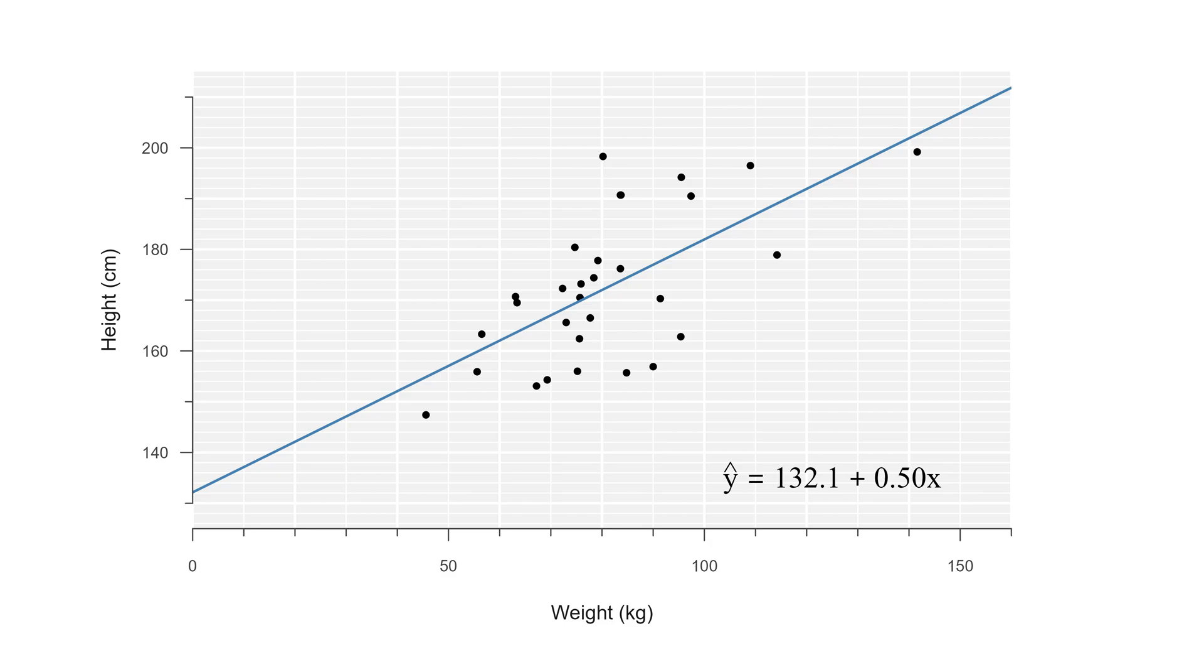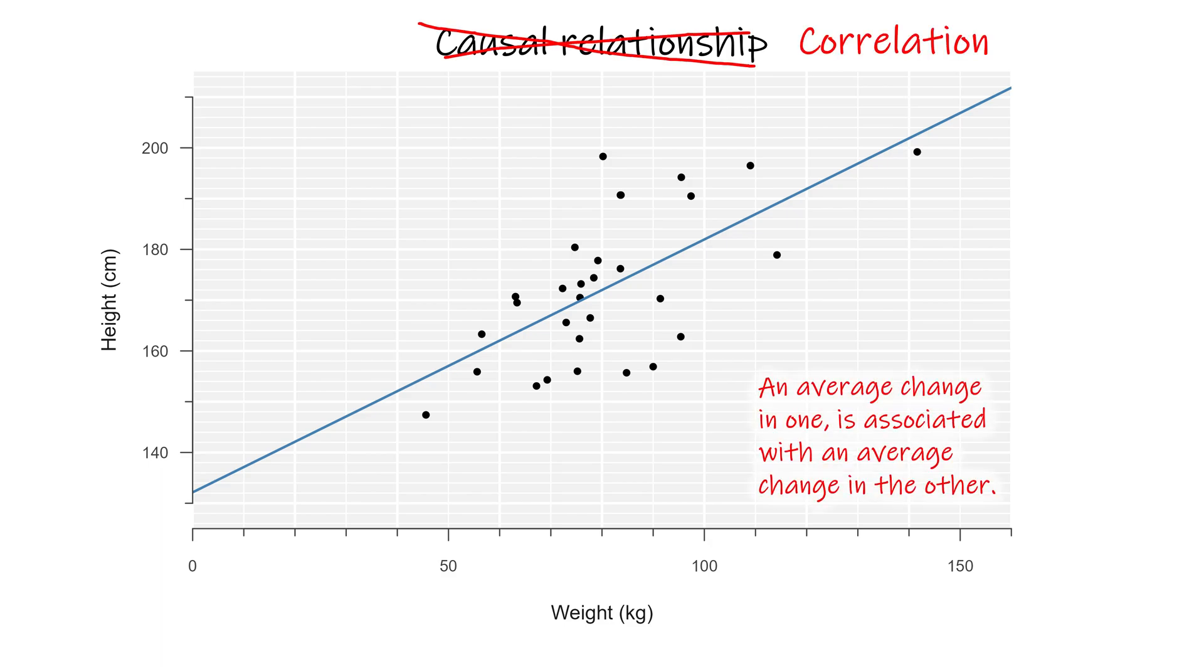The example also shows some limitations of regression models. For instance, if I start eating more and gain 10 kilos, I should not expect to gain 5 centimeters in height, even though that is what the line suggests. So this relationship we estimated is not causal, but rather just a correlation, or association.